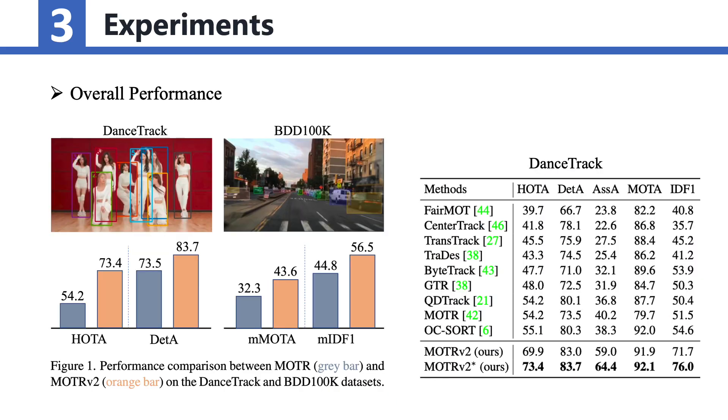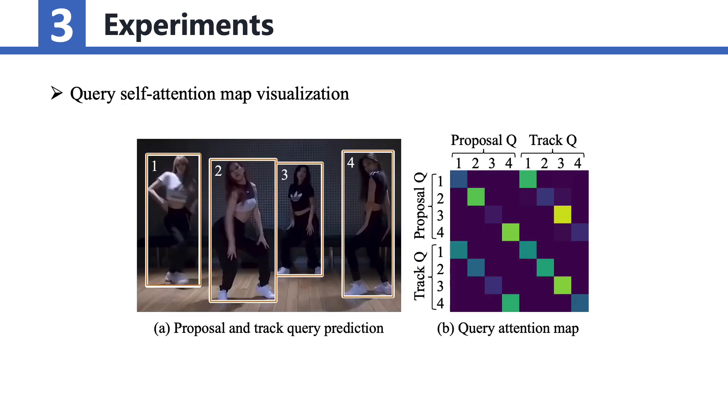Let's move on to the performance. MOTR V2 demonstrates remarkable performance improvements compared to its predecessor, MOTR, on large-scale benchmarks such as DanceTrack and BDD100K. Notably, on the DanceTrack dataset, MOTR V2 surpasses state-of-the-art methods by a substantial margin. We further visualize the self-attention map in the MOTR decoder.